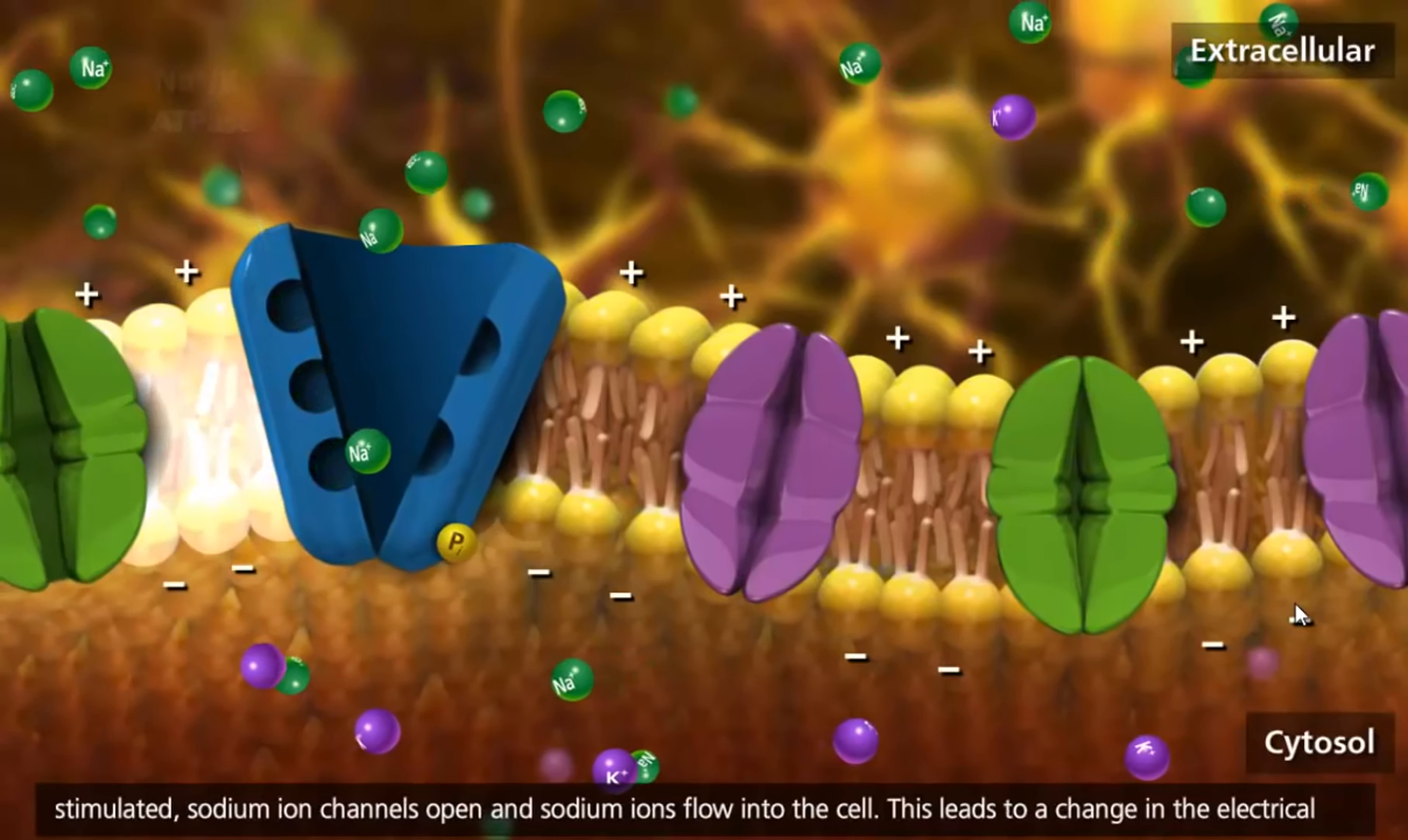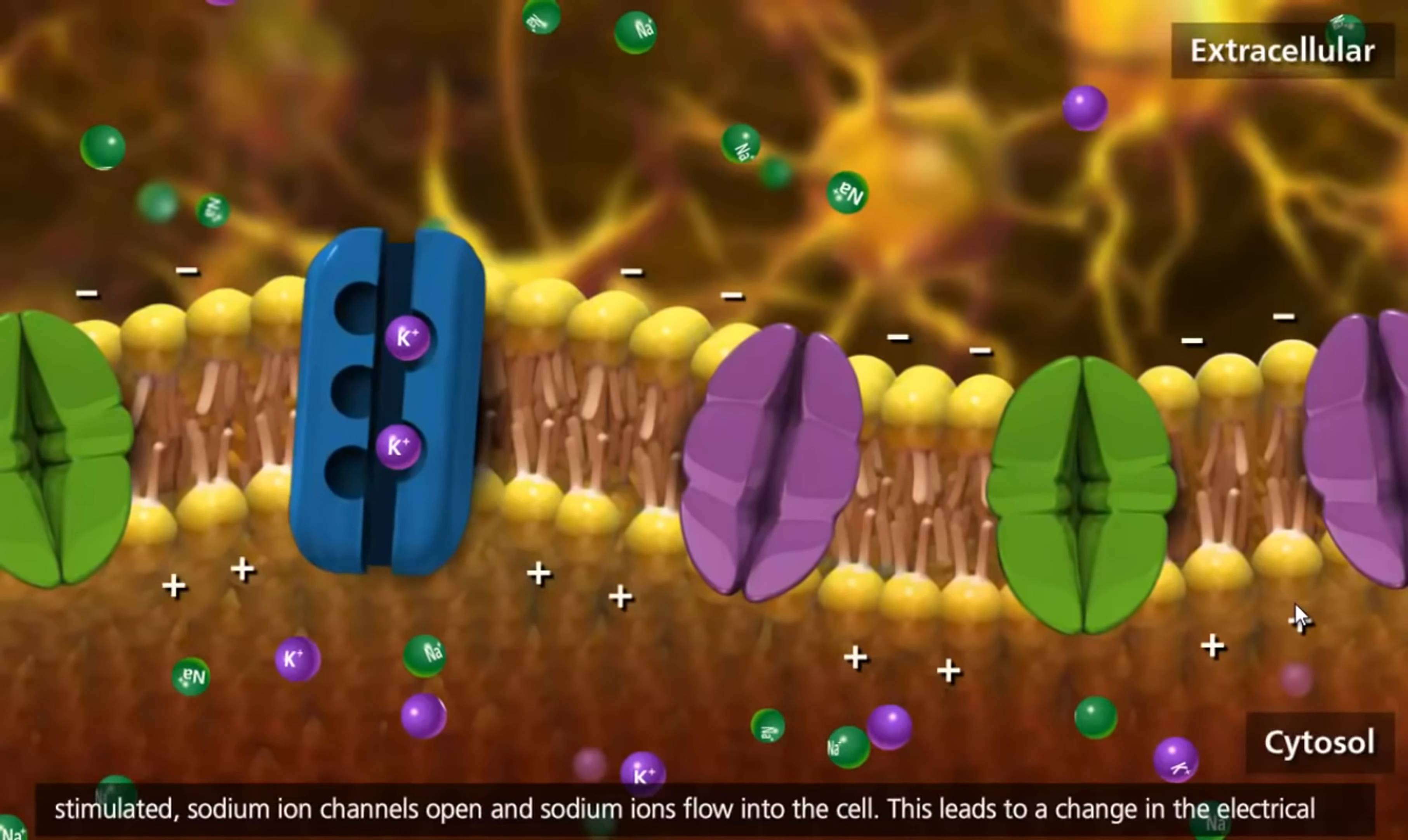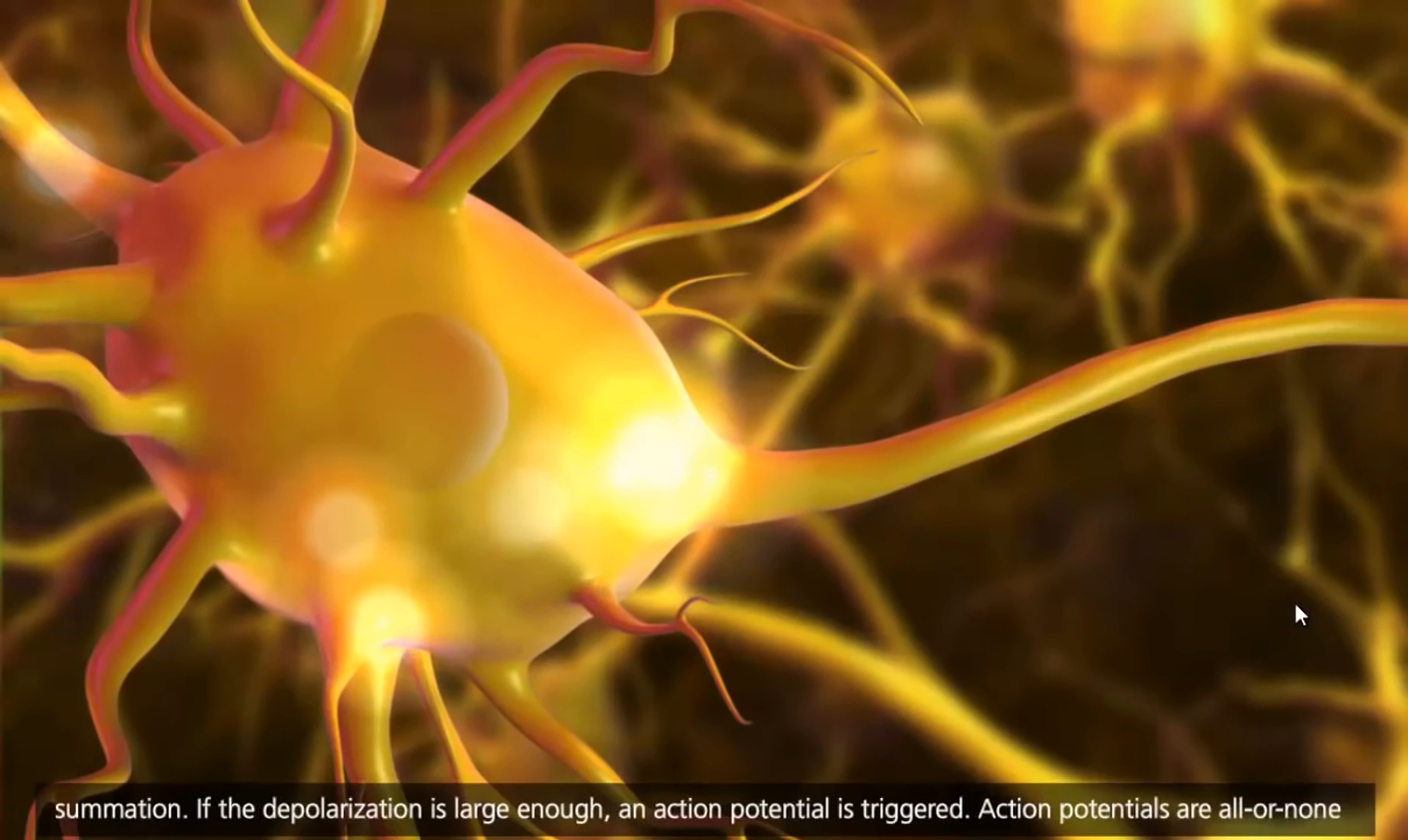When a neuron is stimulated, sodium ion channels open and sodium ions flow into the cell. This leads to a change in the electrical potential across the membrane called depolarization. The depolarizing electrical potential travels down the dendrites and over the cell body. Multiple electrical potentials will combine at the axon hillock in a process called summation. If the depolarization is large enough, an action potential is triggered.